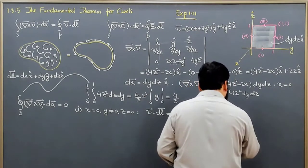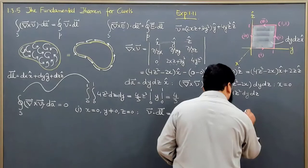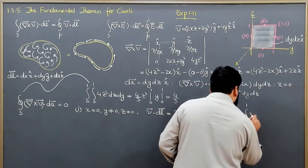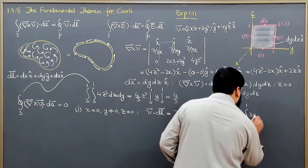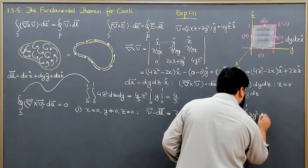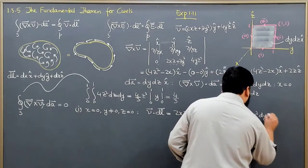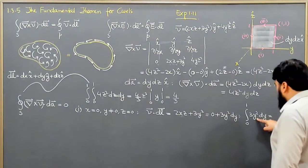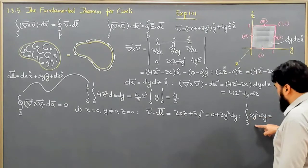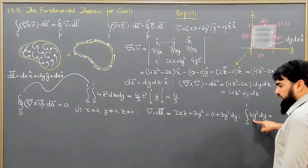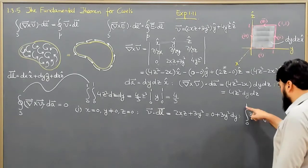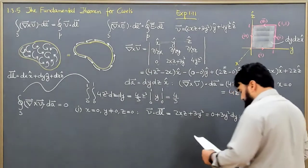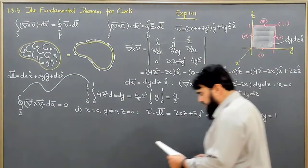Integrating 3y squared dy from 0 to 1, the 3 cancels with the cube term and y cubed evaluated gives us 1, so the result of path 1 is equal to 1.